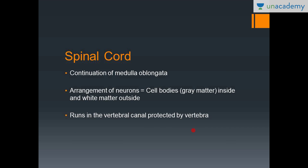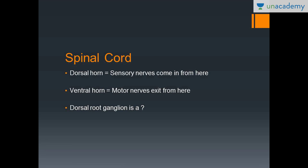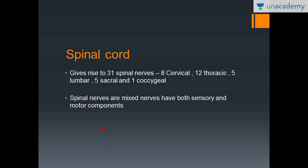On the cut section of the spinal cord, you can see a dorsal horn and a ventral horn. The dorsal horn contains the dorsal root ganglion, which is basically a collection of cell bodies. The neurons in the dorsal root ganglion are an example of a pseudo-unipolar neuron, because it gives rise to a single process which divides into two.